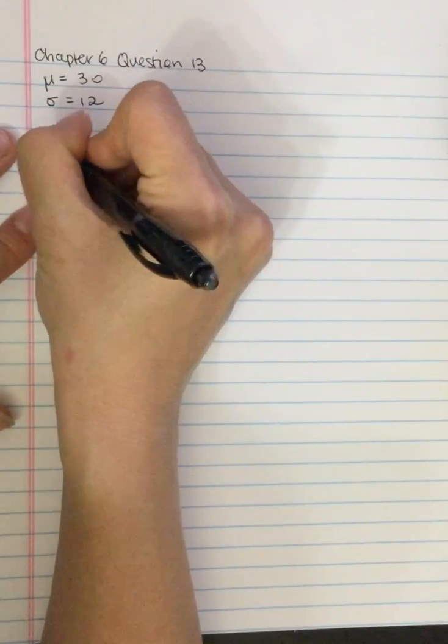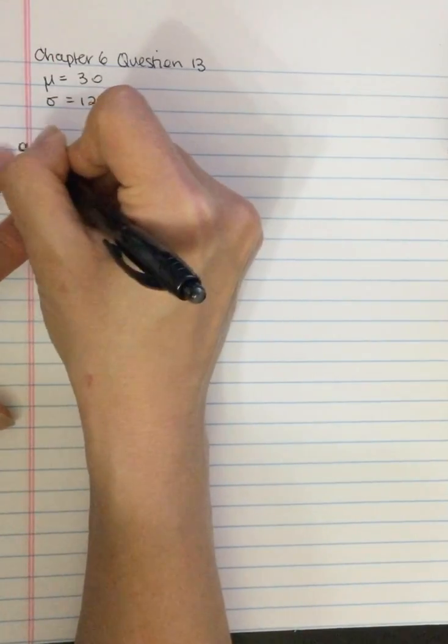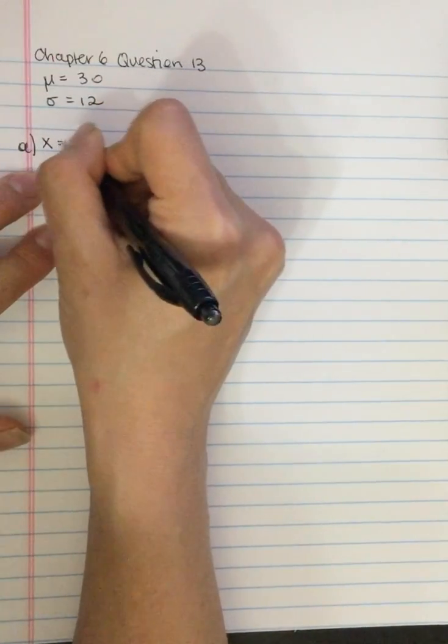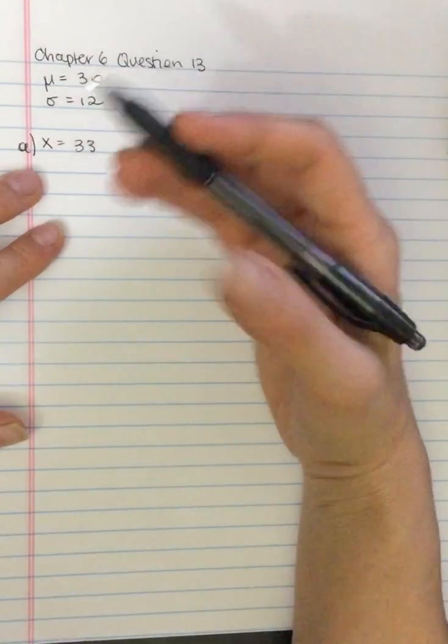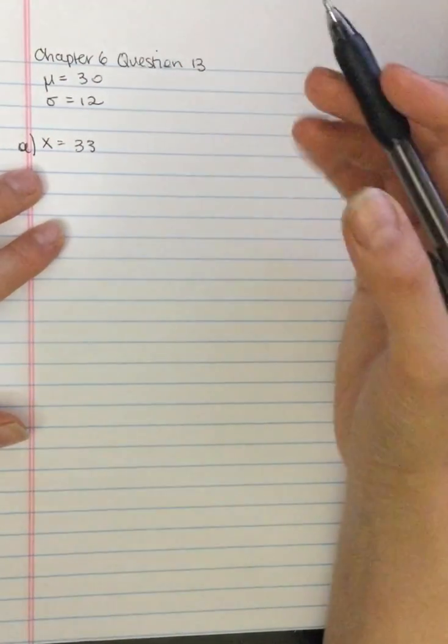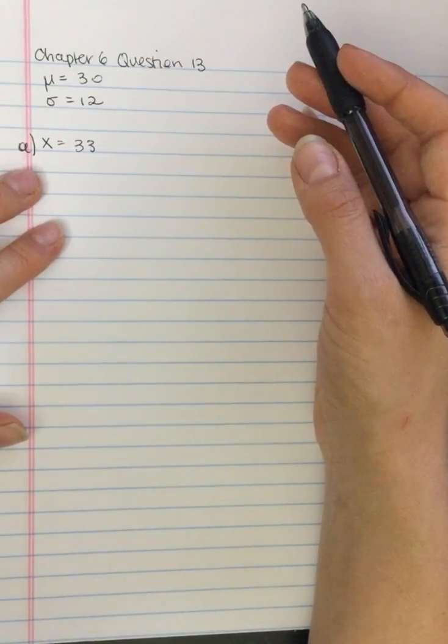So we've got question a, x equals 33. The first thing that we have to do is convert this to a z-score, and then we can use the z-score with the unit normal table.